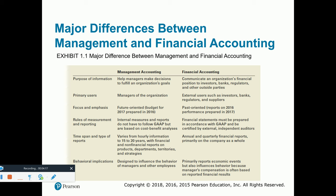The primary users of managerial accounting are internal management. The focus of financial accounting is past information — when we prepare a balance sheet, income statement, or cash flow statement, we're looking at transactions that occurred in the past. However, managerial accounting reports, like budgets and forecasts, are really an expectation of what might happen in the future. As for rules, financial accounting is rules-based — we need to be in accordance with GAAP and get certified through external independent auditors. Managerial accounting is like an art class; there are really no rules. Whatever works internally within the company, those are the reports we build on.